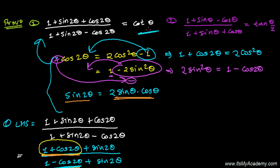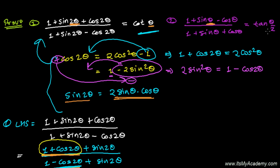Now we're going to follow exactly the same process for question 2. One thing to keep in mind: in question 1, the formula used cosine of 2θ and the result involved θ — the angle was halved. So now in question 2, the angle is θ, and the result will be θ/2. That is, 2θ turns into θ, and θ turns into θ/2.